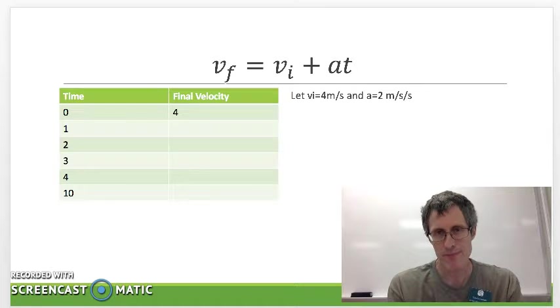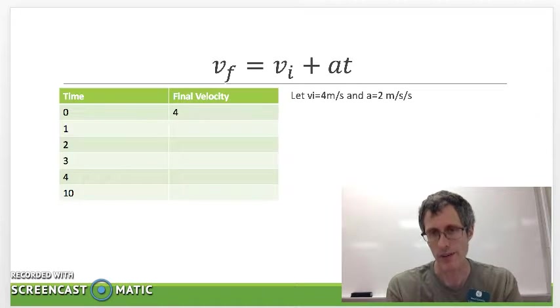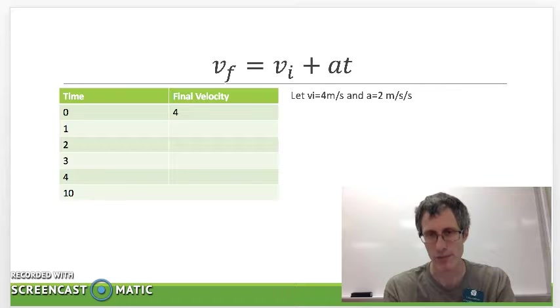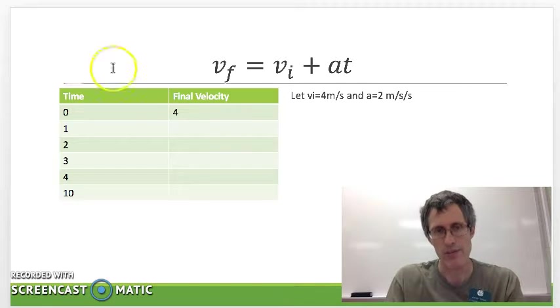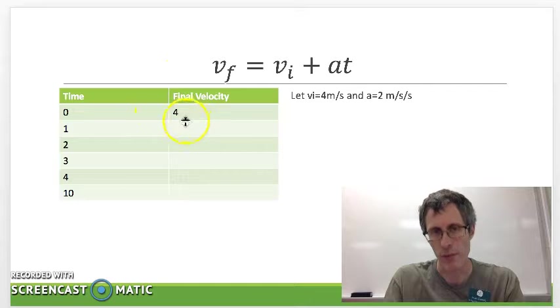Let's suppose that you've got a car going down the road and it's initially going at 4 meters per second and it's accelerating at a rate of 2 meters per second squared. So at time zero its velocity is 4.